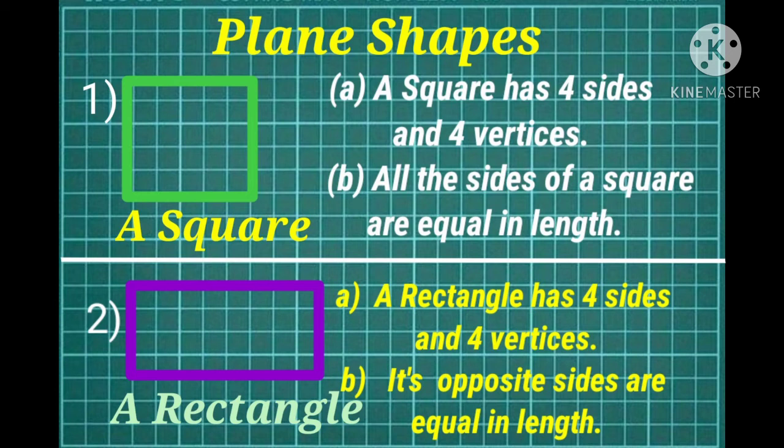Now let's study about the properties of plane shapes. Now first one is square. A square has 4 sides and 4 vertices. Children, here vertices means corners. So we can say that a square has 4 sides and 4 corners. All the sides of a square are equal in length.